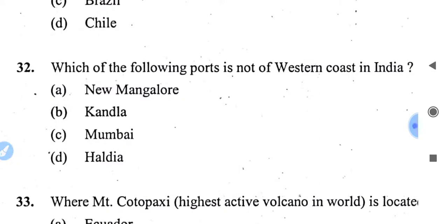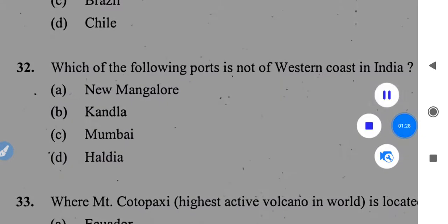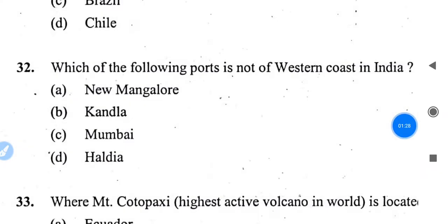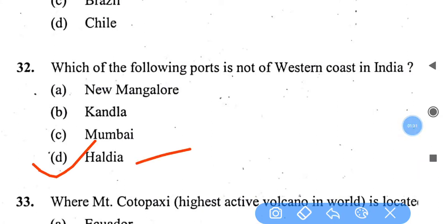Which of the following ports is not on the western coast of India? The options are New Mangalore, Kandla, Mumbai, or Haldia. The right answer is Haldia. New Mangalore, Kandla, and Mumbai are all on the western coast of India.